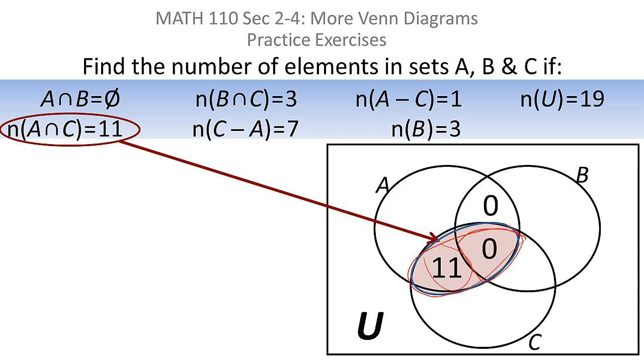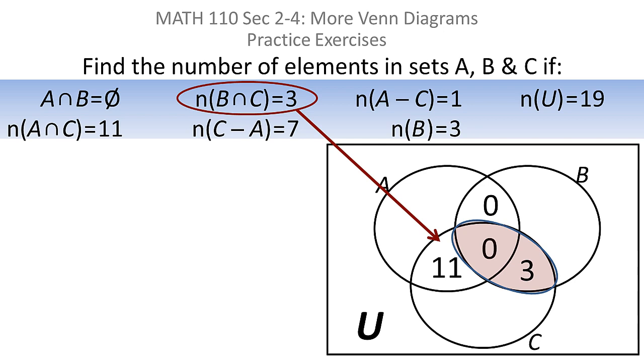And just keep up this process. They also tell me that B intersected with C gives me three, but because there's already a zero there, all three of them have to be inside that shaded area. So all three have to be here because you have none in here.